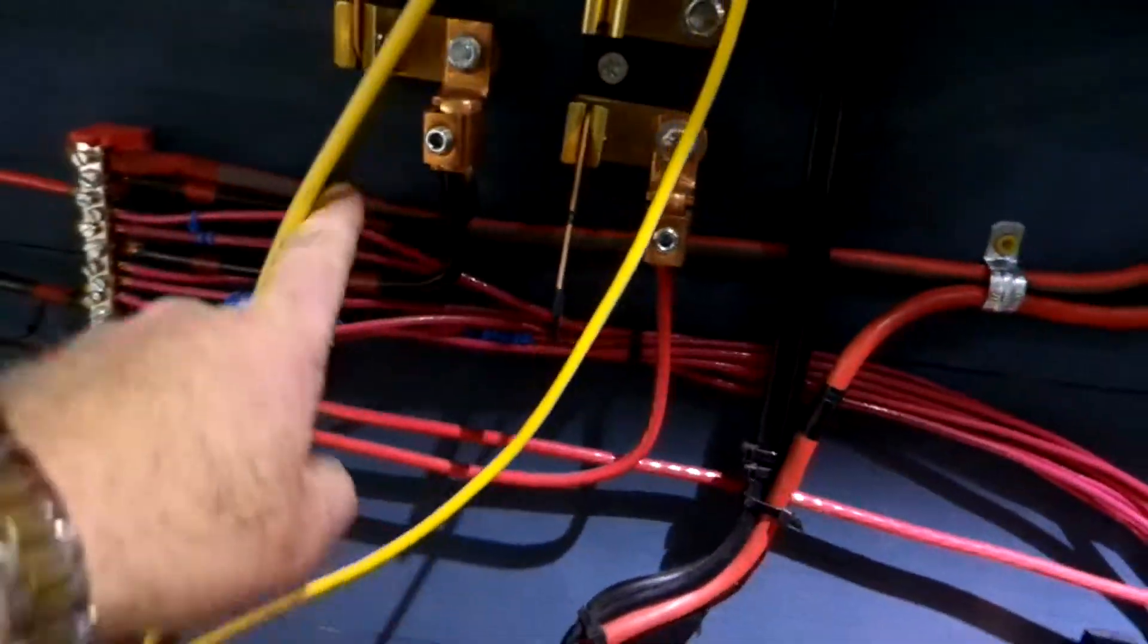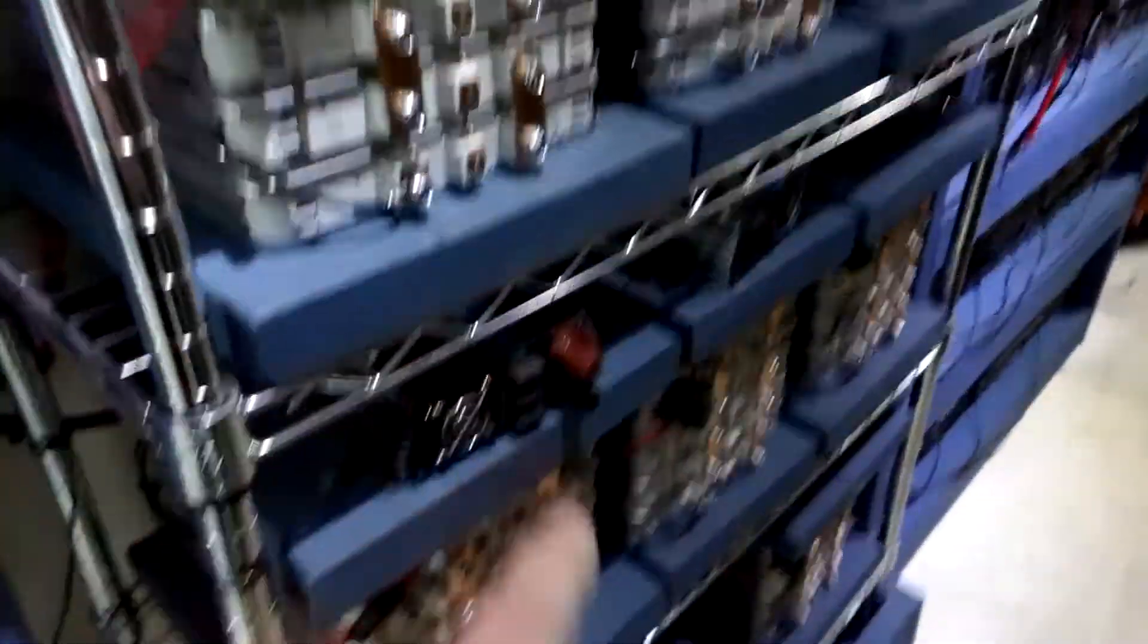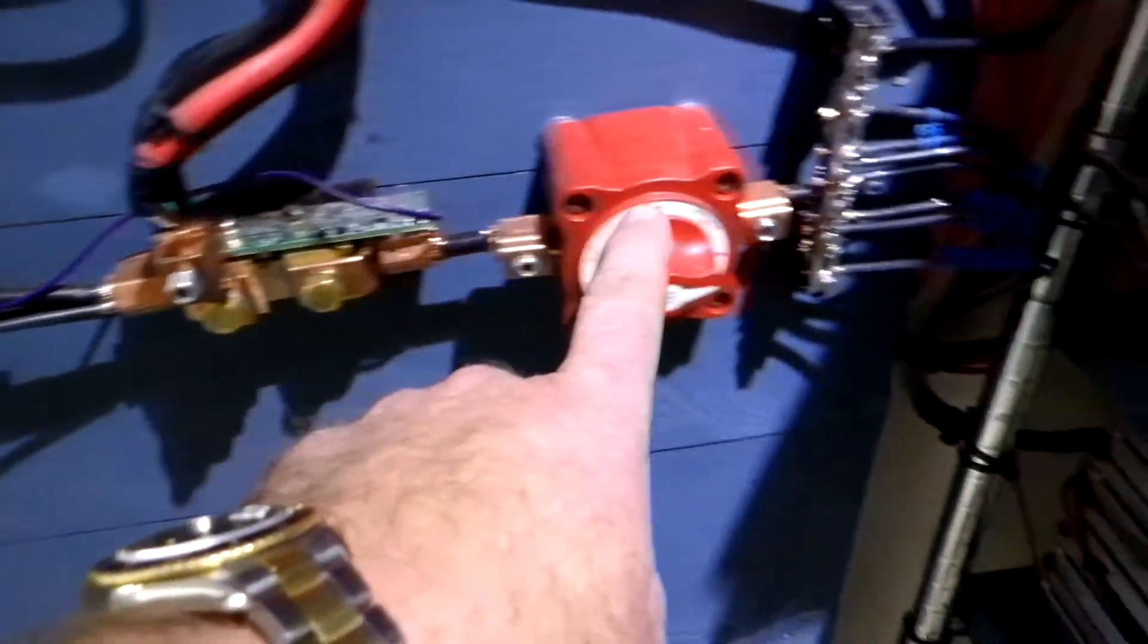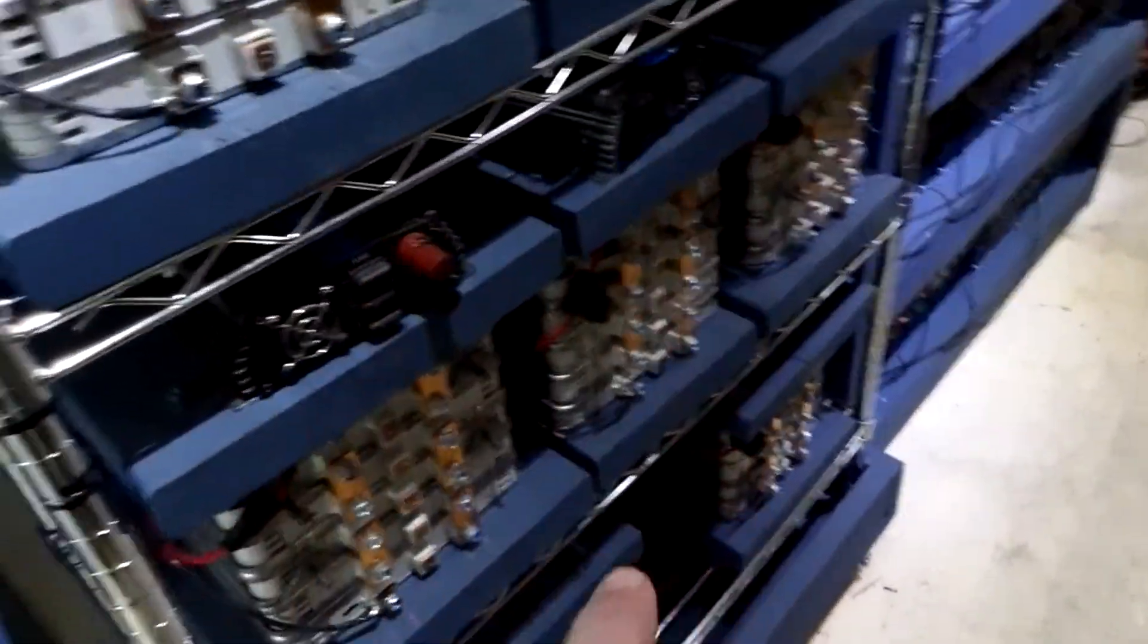All those wires go over to the positive wires, come off this bus bar and go over to the Nissan Leaf packs. Likewise, the negative wire that comes out of the charge controller goes through your Whiz Bang Junior to a common bus bar to all the negative leads to all the Leaf packs.